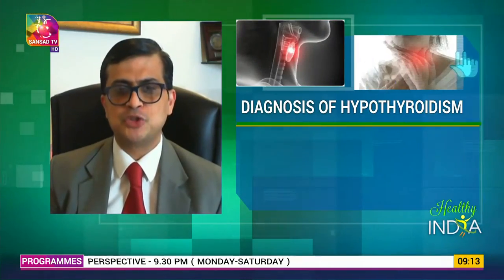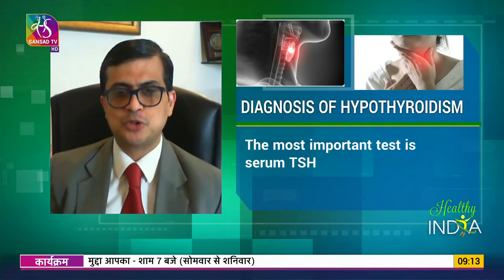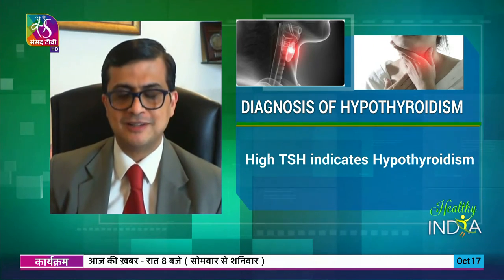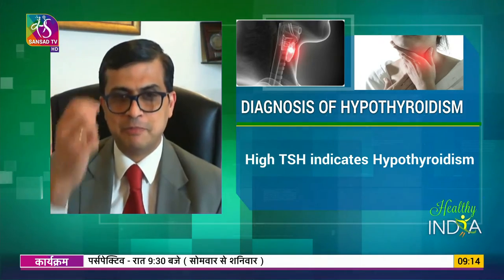There are three common blood tests for thyroid: T3, T4, and TSH. If only one test were to be chosen, it would be the TSH test. When the thyroid gland doesn't work, the pituitary gland - just behind the area of the bindi on the forehead - makes a hormone called TSH, thyroid stimulating hormone. When the thyroid gland doesn't work, as in hypothyroidism, TSH goes up. So a high TSH reflects a low level of thyroid hormone in the blood.